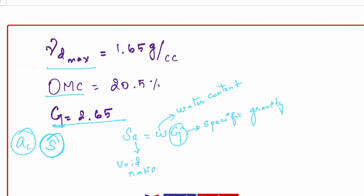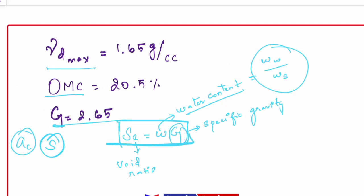Specific gravity is the ratio of unit weight of solids to unit weight of water. Water content (moisture content) is the weight of water divided by the weight of solids — don't get confused between these terms. Void ratio e is defined as the volume of voids divided by the volume of solids.